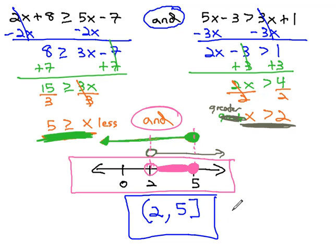This tells us that if we pick any number between 2 and 5, including 5, but not 2, not just the first, not just the second, but both inequalities, because of the and, are true.